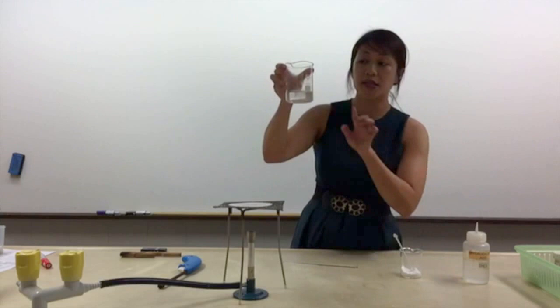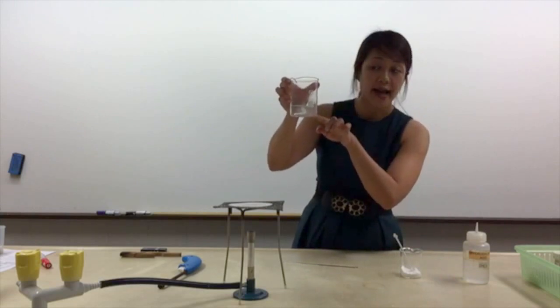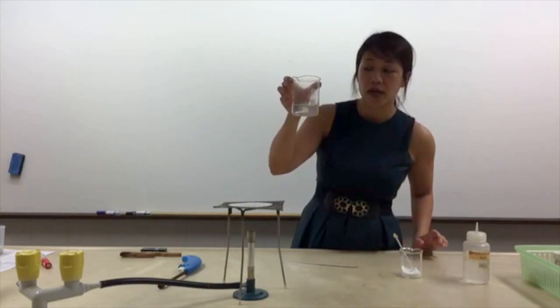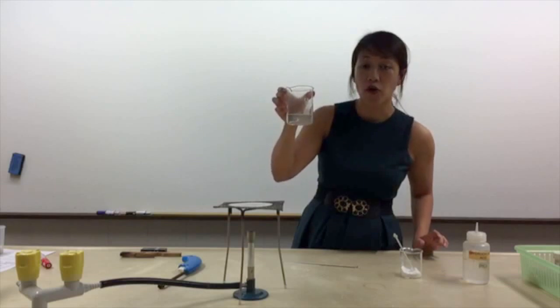So you will see a residue of zinc oxide at the bottom of your beaker and you will see a clear solution that is being formed. The clear solution that is formed is zinc chloride solution.